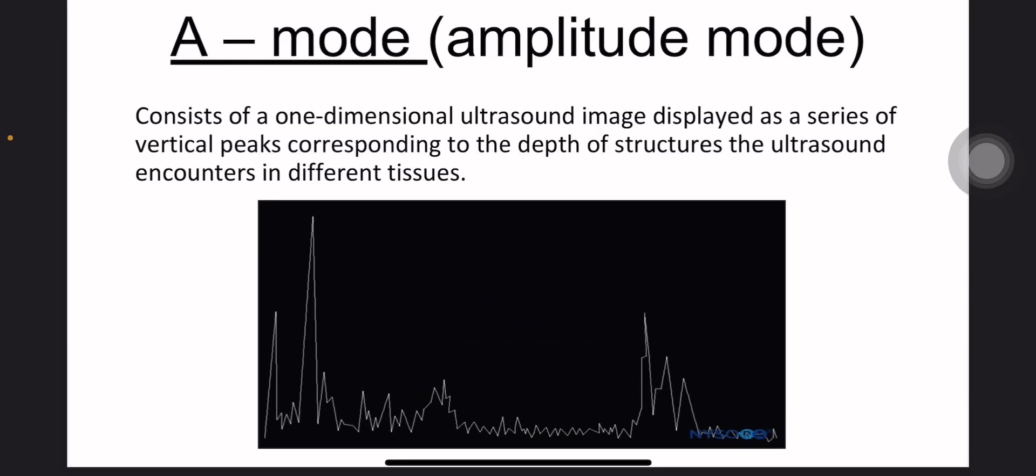When the ultrasound beam hits a boundary between tissues with different densities, like the surface of an organ or a different type of tissue, some of the sound waves are reflected back to the probe as echoes. The height or amplitude of each vertical peak represents the strength of the echo returning from that specific depth.